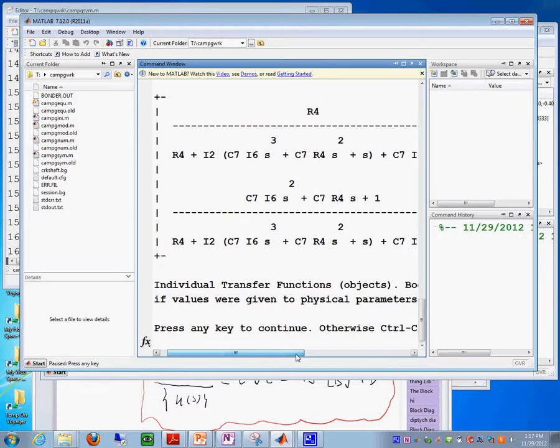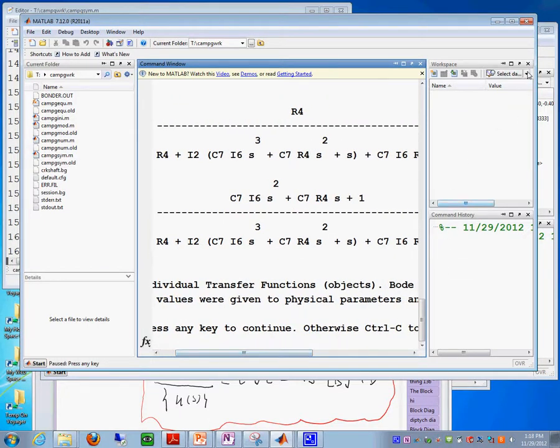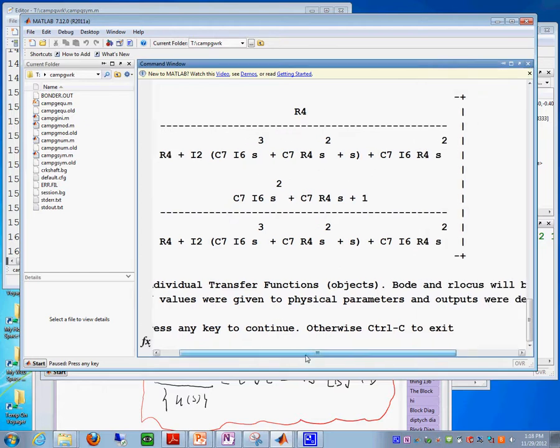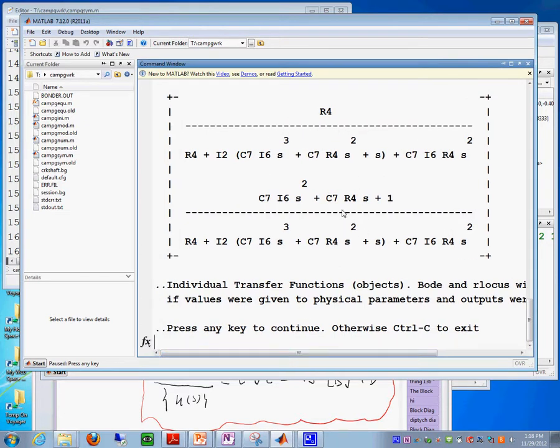It found for you those two transfer functions right there. You could put numbers if you want, you can put some numbers to it. And then you do your step and input response. Would you like me to do that, or does this get the point across?